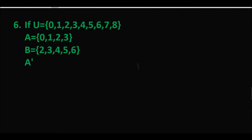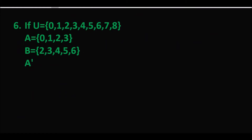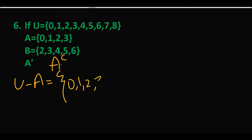Question number 6 में union set, A set और B set मौजूद है। यहाँ हम complement find out करेंगे। Complement के लिए दो symbols use होते हैं — यह बात आपने mind में रखनी है। Complement find out करने के लिए universal set में से A को minus करेंगे। Universal set है {0, 1, 2, 3, 4, 5, 6, 7, 8} और set A है {1, 2, 3}.